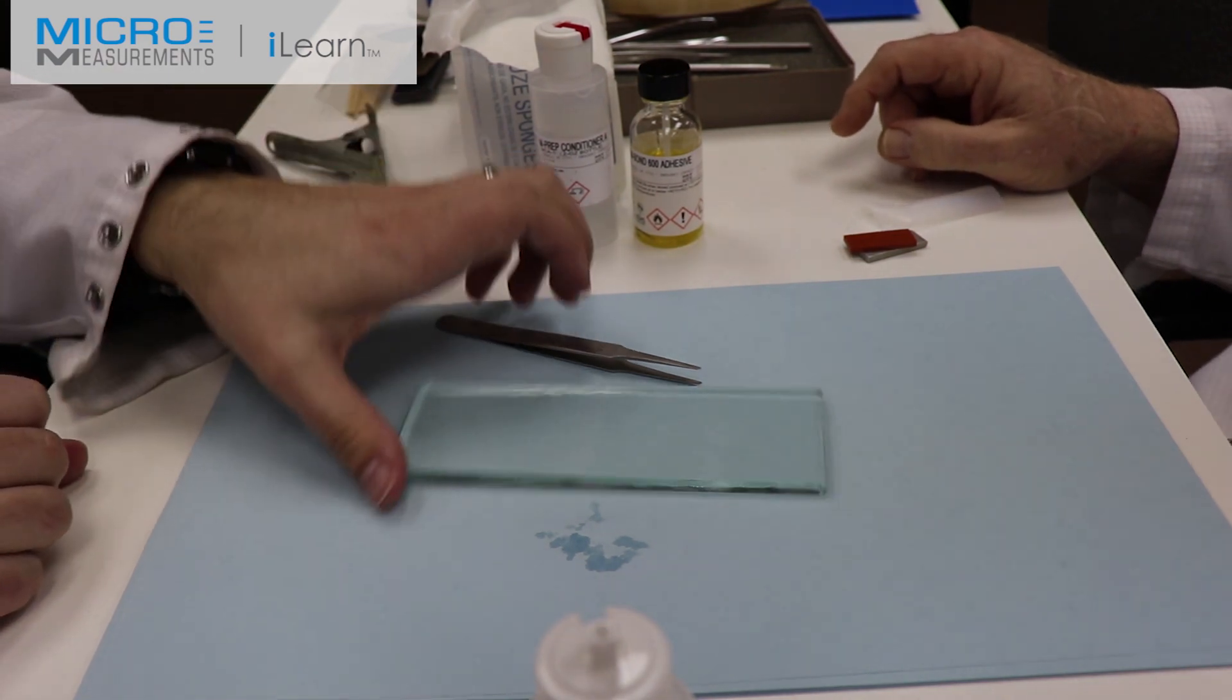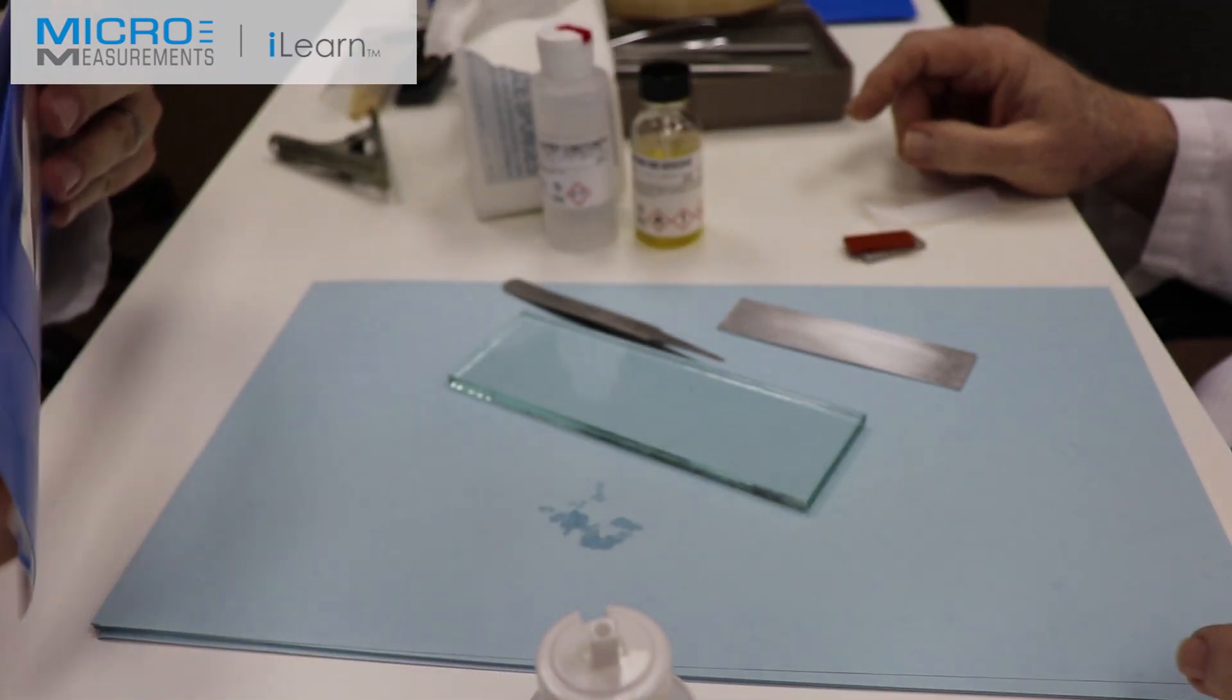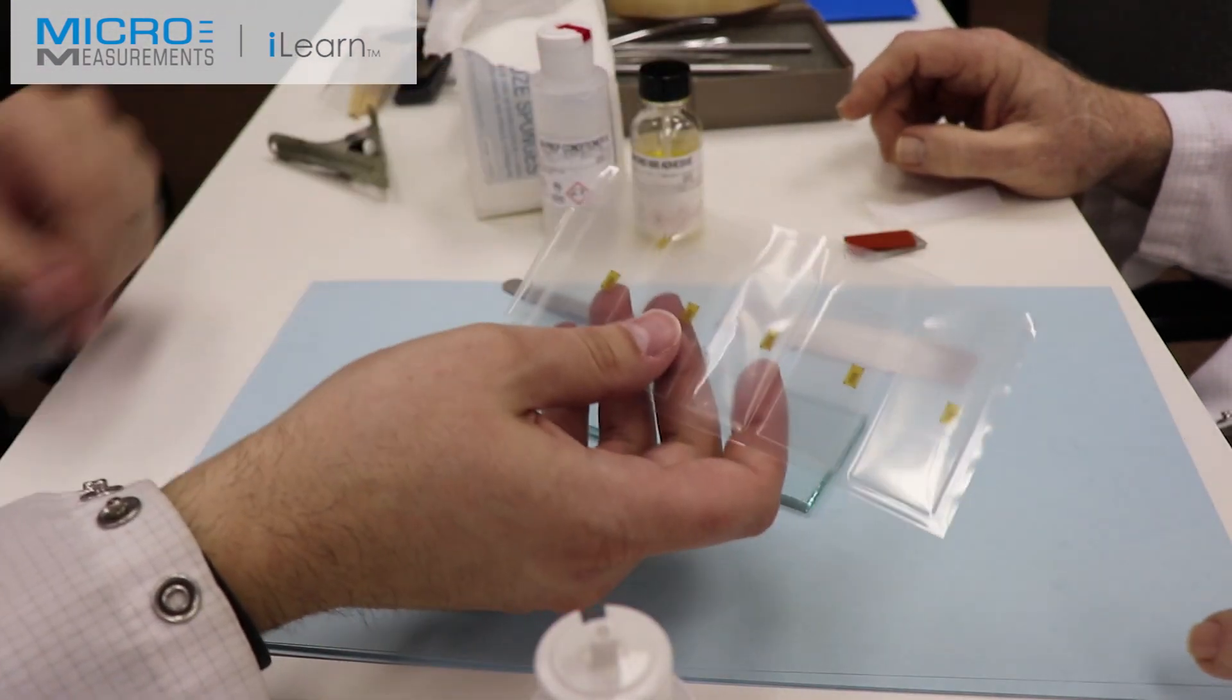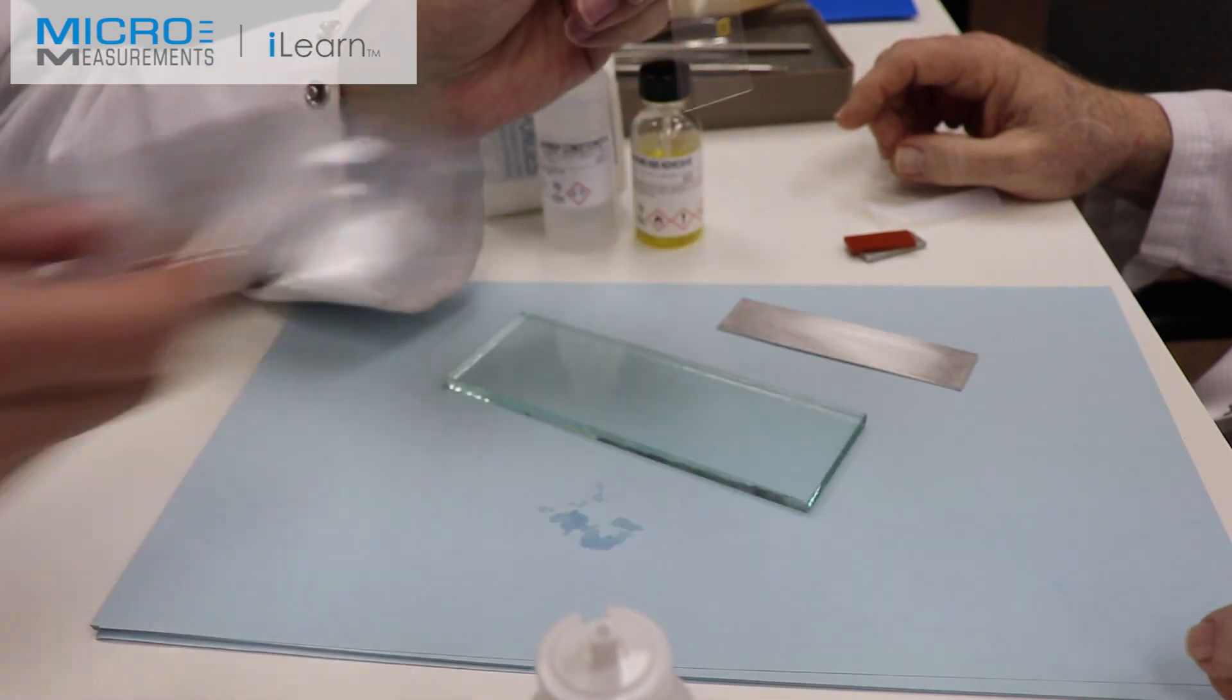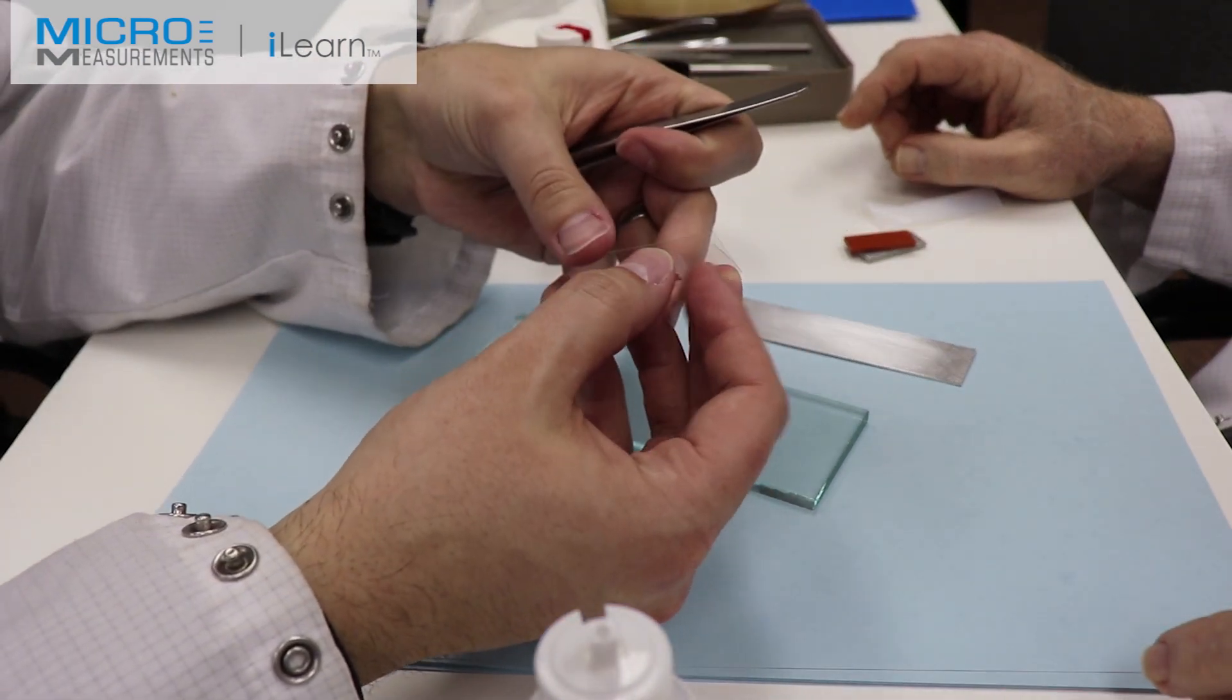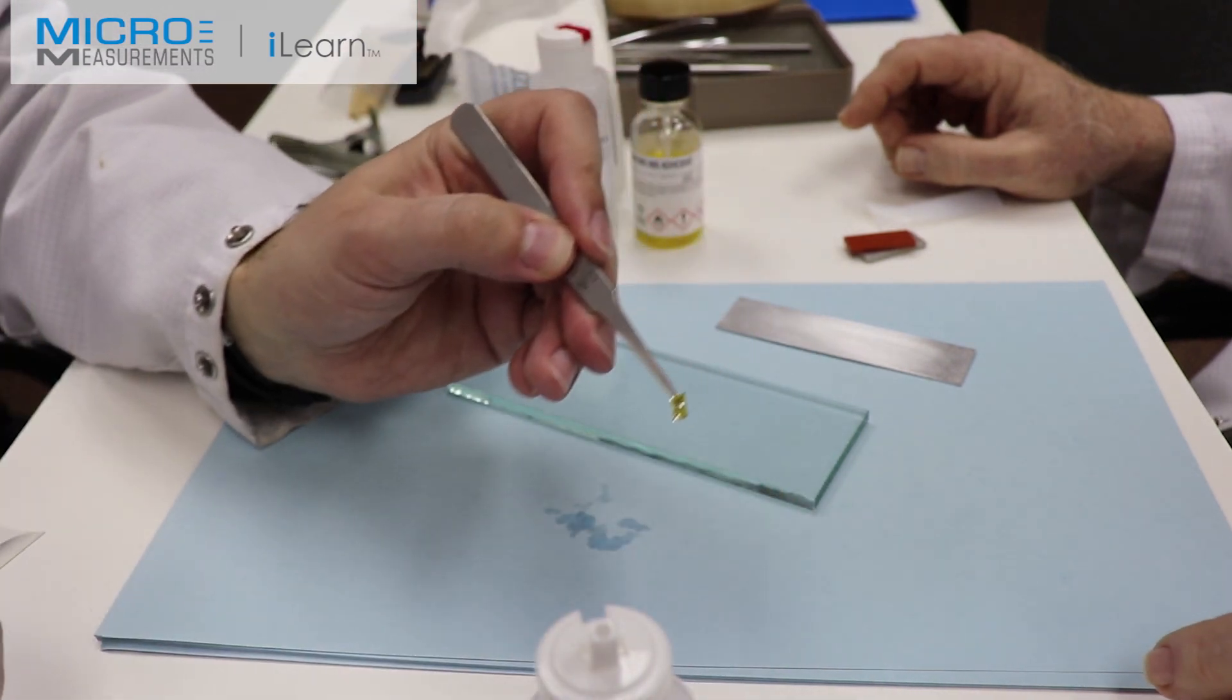Now we're going to open up the gauge package, and using our blunt nose tweezers, having pulled the gauges out of the plastic pouch, he'll splay open that acetate folder, and if you'll notice, he's going to grab the gauge by the tab end. If we grab it by the grid end, there's a possibility that we'll damage that grid during the install.